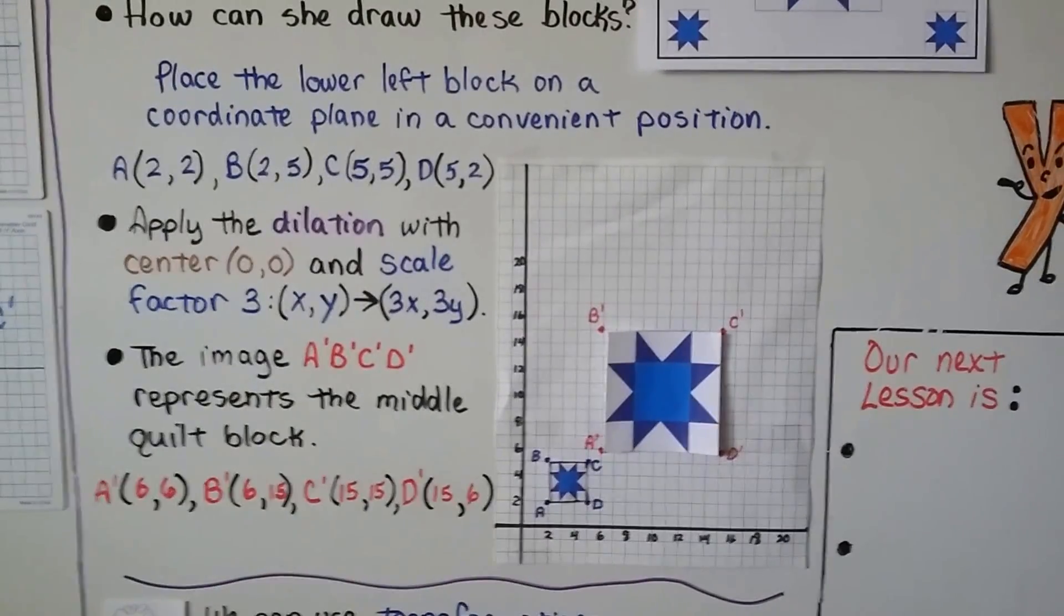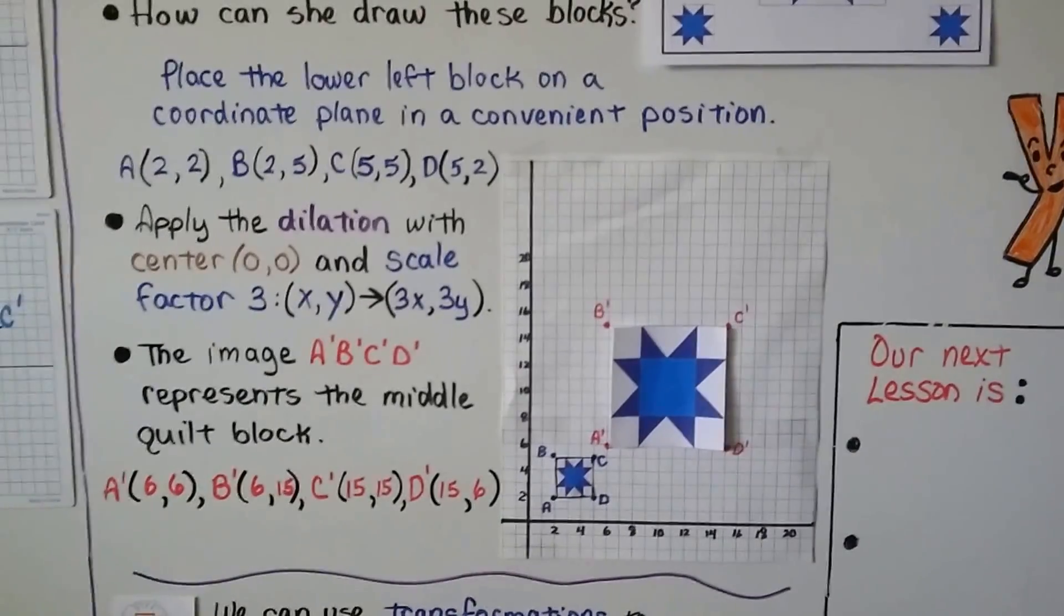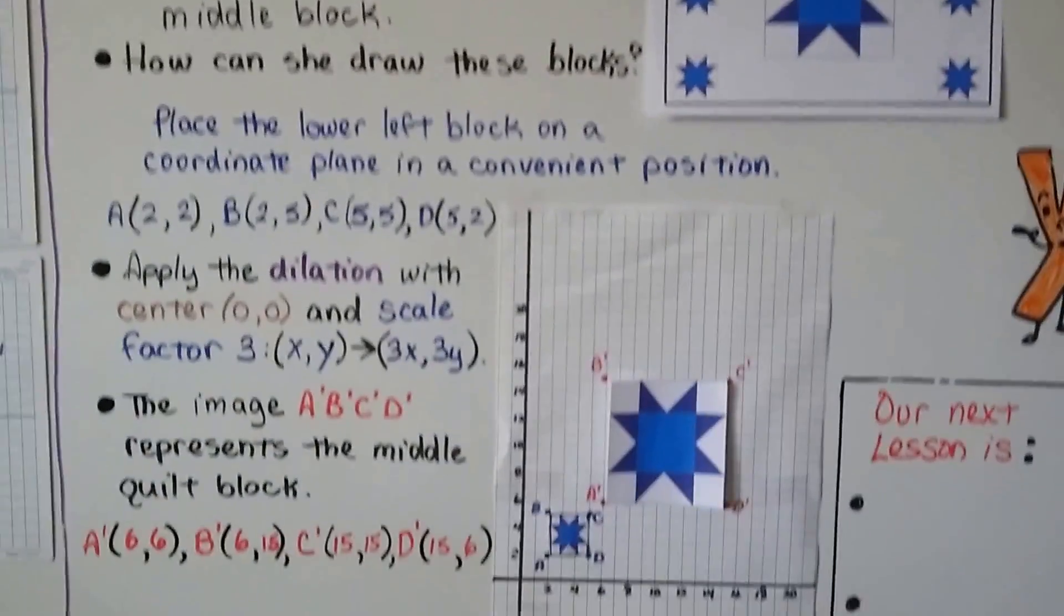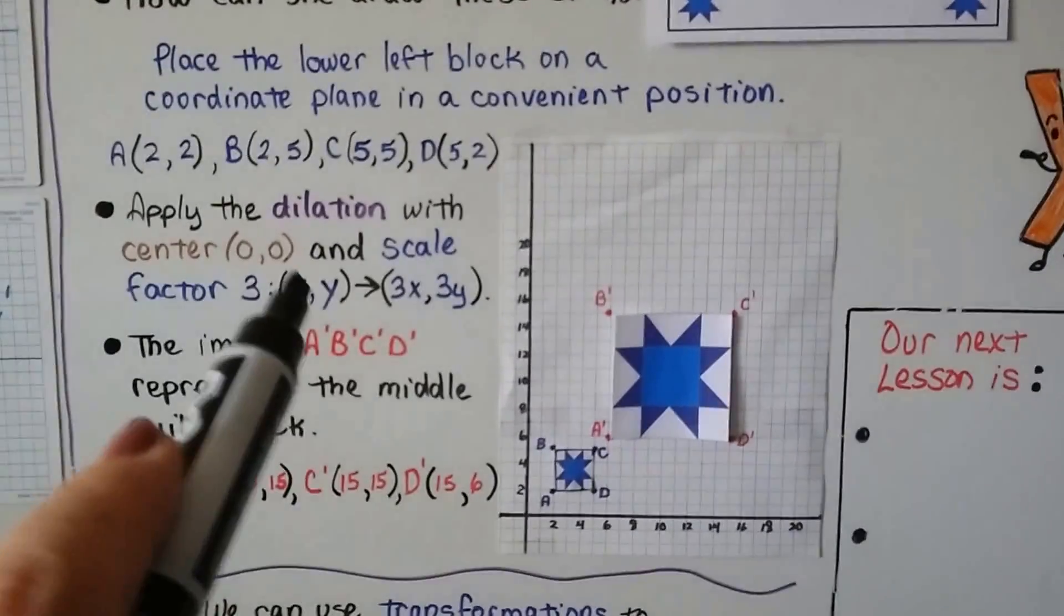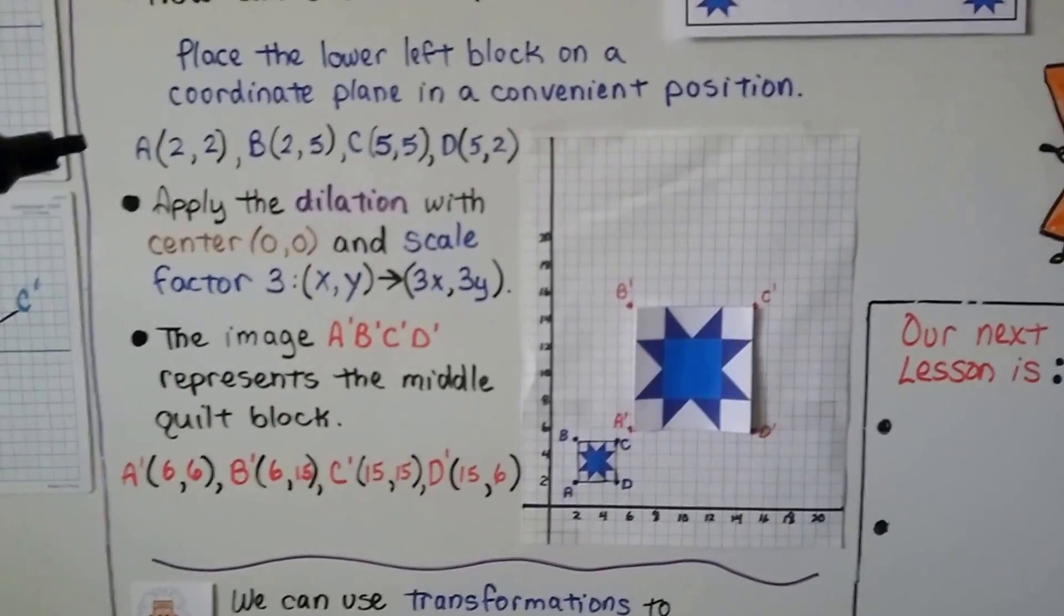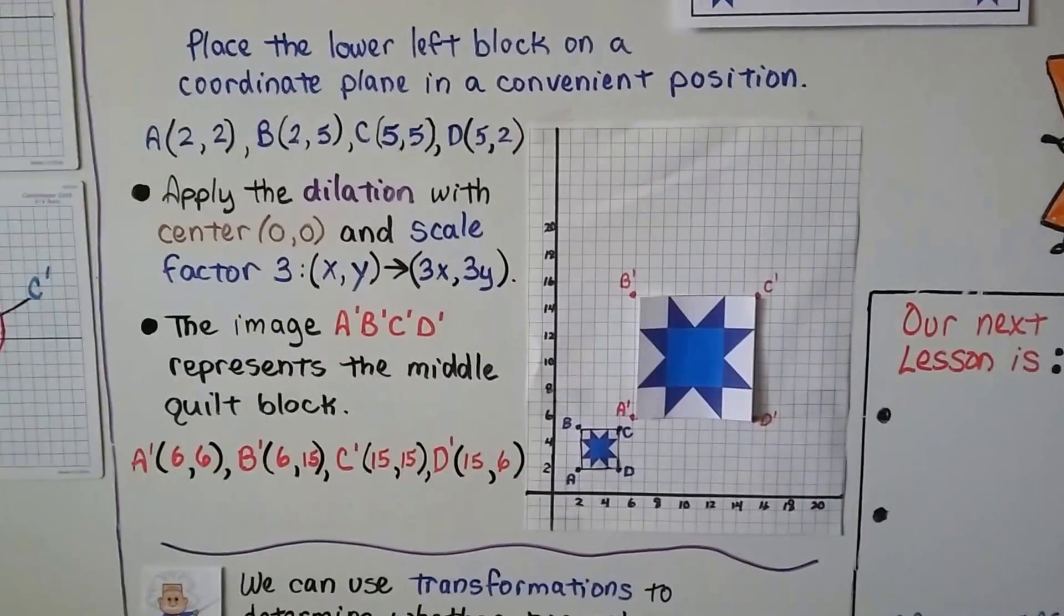We applied the dilation with a center 0,0, that's the center of dilation, and a scale factor of three because it's supposed to be three times the size. So that's our scale factor. And x, y will translate to 3x, 3y. So all of these ordered pairs are going to be multiplied by 3 each.